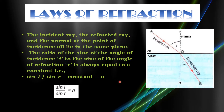There are two laws of refraction. The first one is: the incident ray, the refracted ray, and the normal all lie in the same plane. You can see in this figure that the incident ray, refracted ray, and the normal are all lying in the same plane of paper or page or this screen. No ray is out of the plane — all are lying in the same plane.